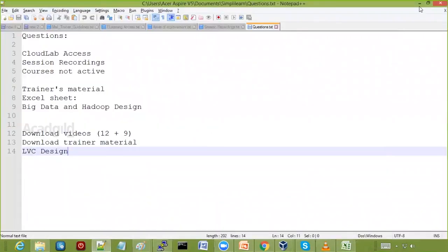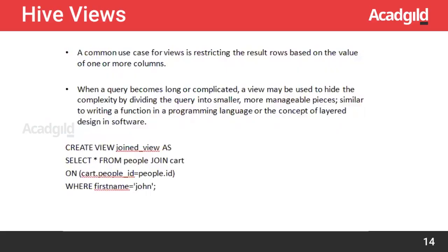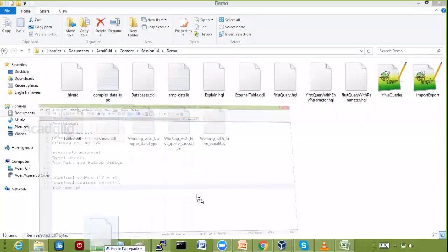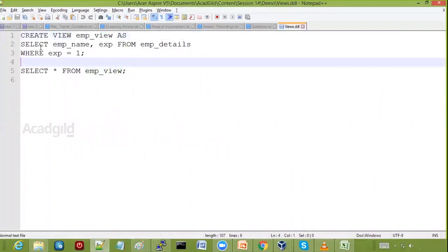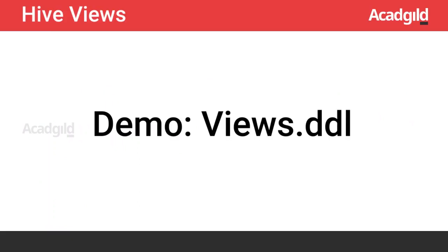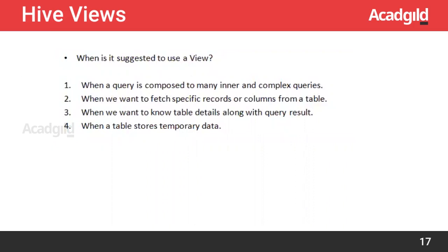In RDBMS the column ordering may not matter as much. You can use views in Hive the same way you use them in RDBMS — either to hide complex queries or to fetch a subset of a table. The syntax to create a view is very similar to RDBMS. For example, I'm creating a view called EMP view, selecting employee name and experience from EMP details where experience equals one. Whenever you query the view, this query executes and returns the result.